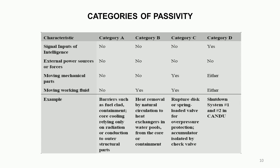Category D is differentiated by requiring an active signal input. This essentially refers to shutdown systems — any shutdown system for a reactor has to actuate on a particular signal. That signal is active; the rest of the things may be passive. This categorization helps in carrying out reliability calculations and comparing different systems for degree of passivity. Category D is the least passive and Category A is the most passive.